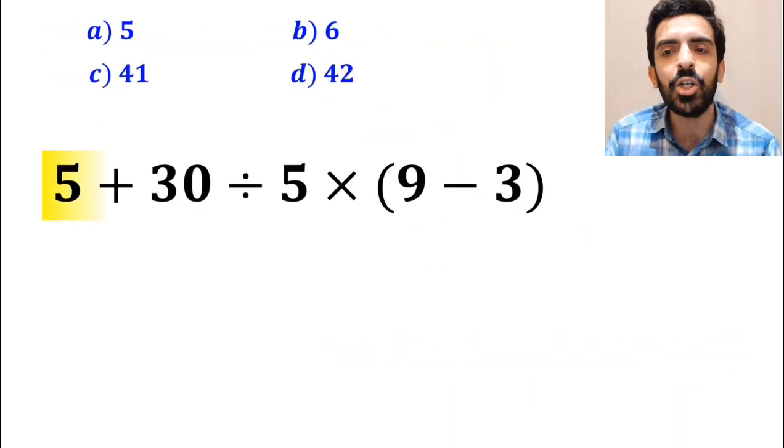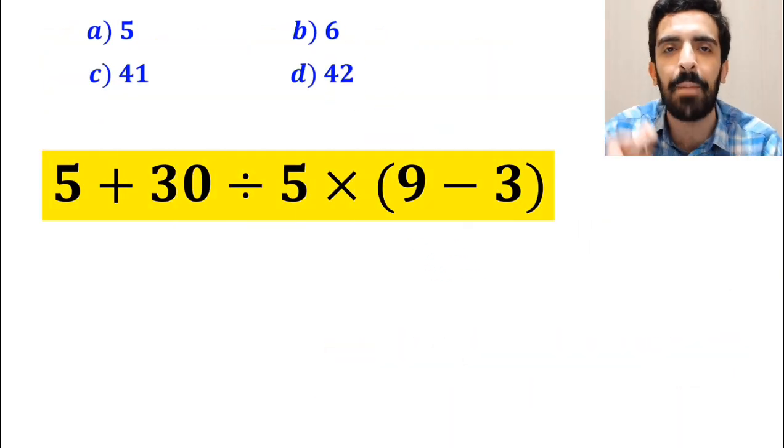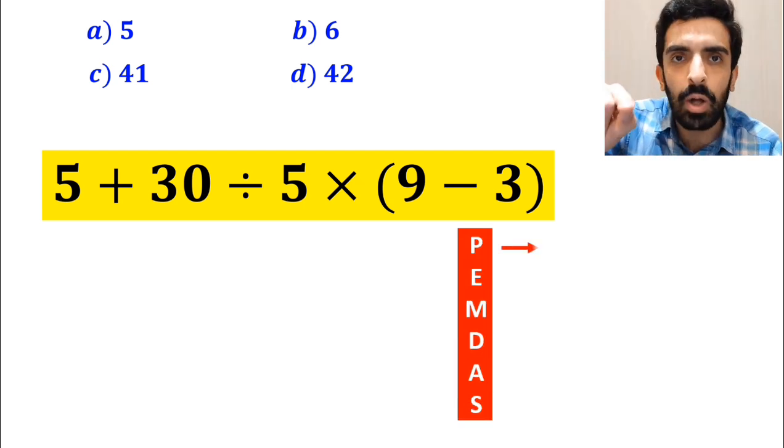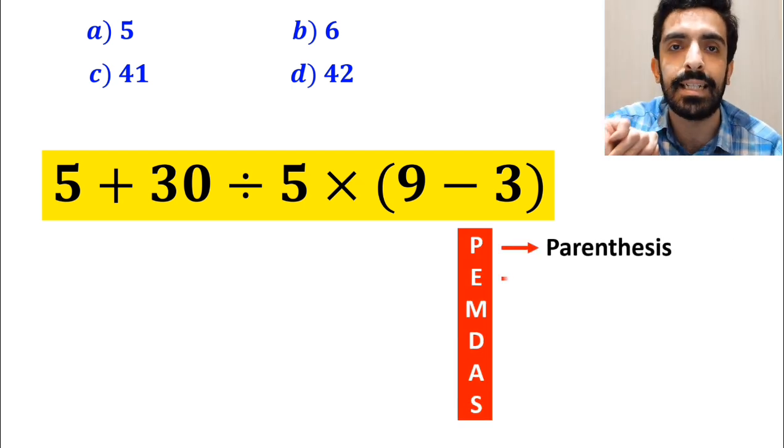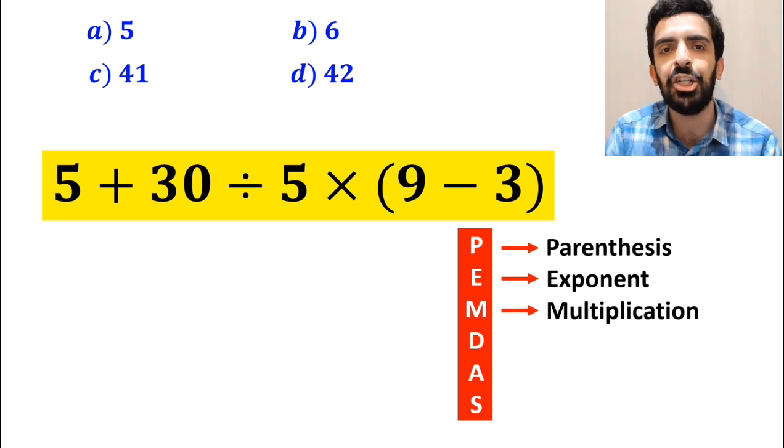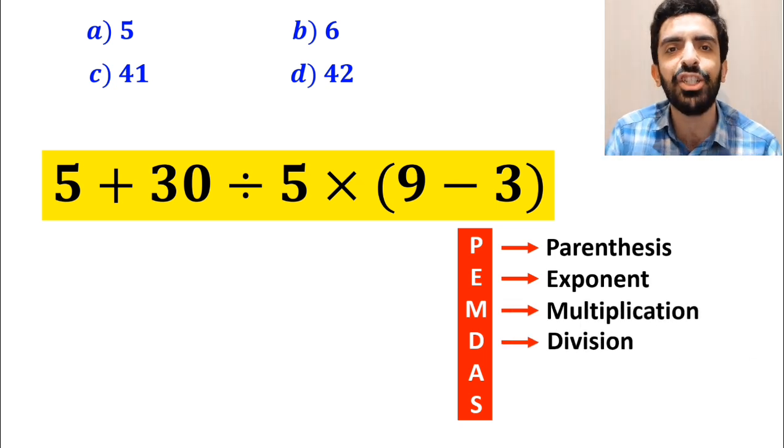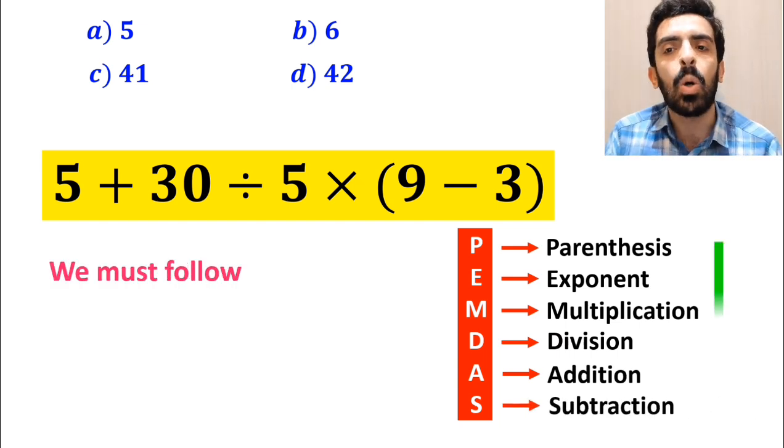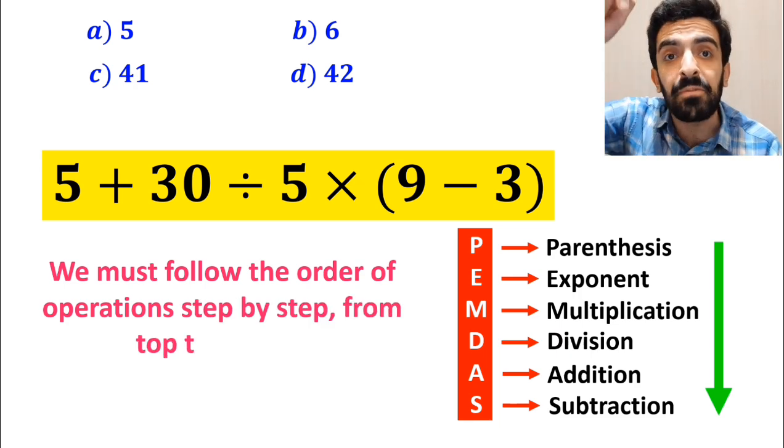Alright, now let me show you how to solve this expression properly. To solve this problem, we must follow the PEMDAS rule. And in this rule, P stands for parenthesis, E stands for exponent, M stands for multiplication, D stands for division, A stands for addition, and S stands for subtraction. We must follow the order of operations step by step from top to bottom.